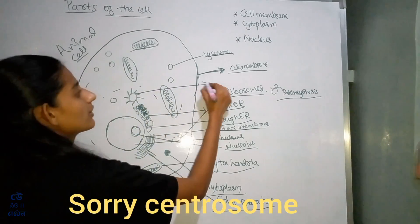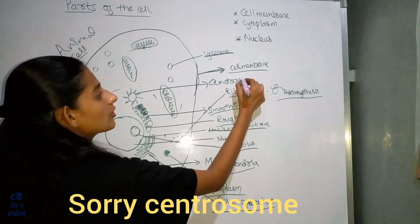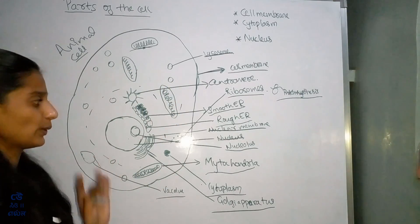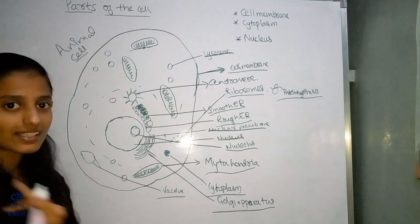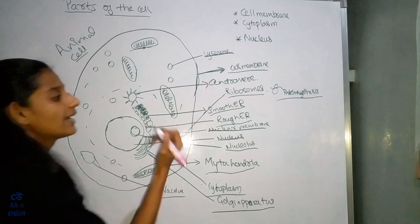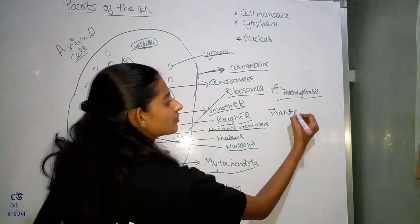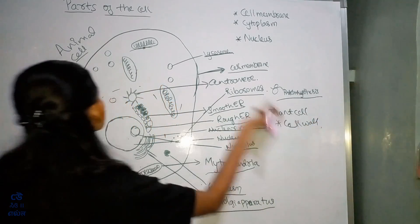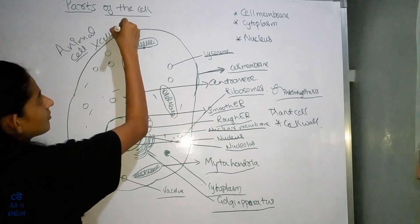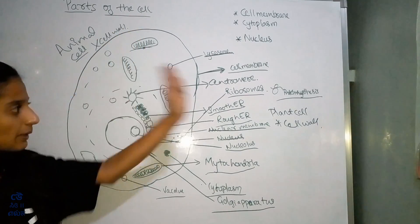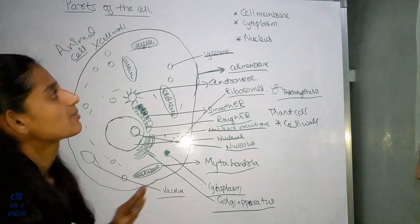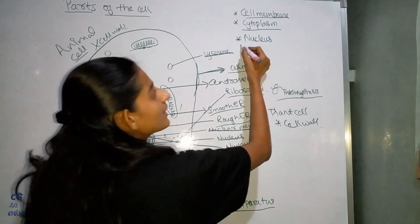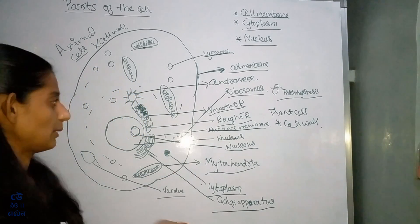And this is the centrosome. So these are animal cell parts. Now for plant cells, one difference is it has a cell wall present, whereas in animals there is no cell wall. So these are the different parts of the animal cell. Now we can discuss cell membrane, cytoplasm, and nucleus one by one.